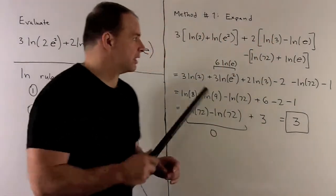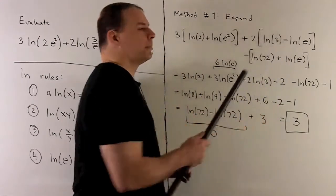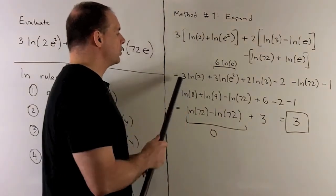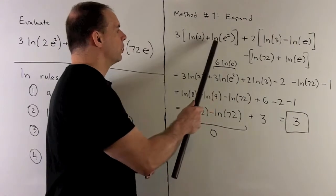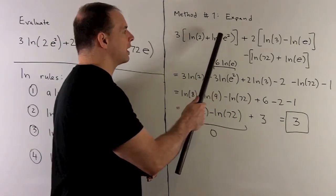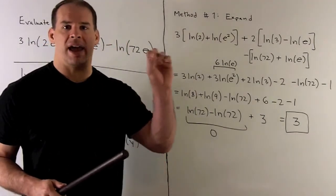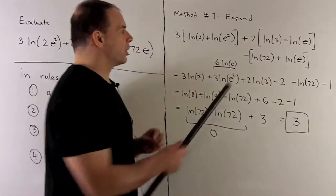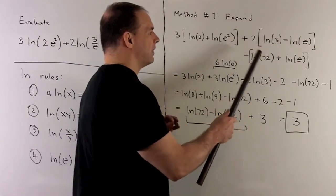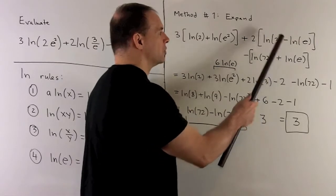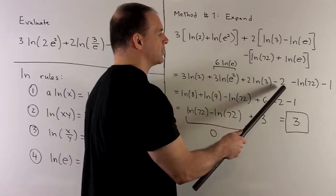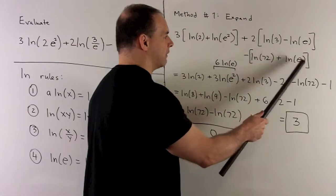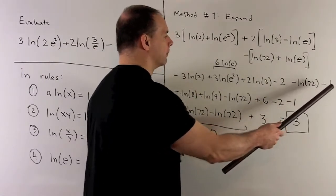Going through term by term: we get 3 times natural log of 2, then for the next term we have 3 out front — natural log of e squared becomes 2 natural log of e, giving us 6 natural log of e. Next, 2 times natural log of 3, then natural log of e equals 1, so we get minus 2. Then minus natural log of 72, and natural log of e picks up a minus sign, giving minus 1.